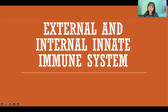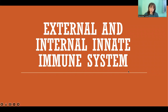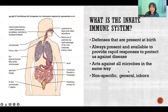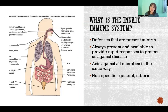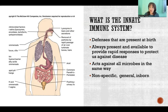Hello, in this video I'm going to explain the difference between the external and internal innate immune systems. The innate immune system are all of the defenses that are present at birth, so we do not need to develop the innate immune system. These are all of the ways that the different systems of the body protect the body, so each system has many different mechanisms that it uses to protect us from infection and injury.